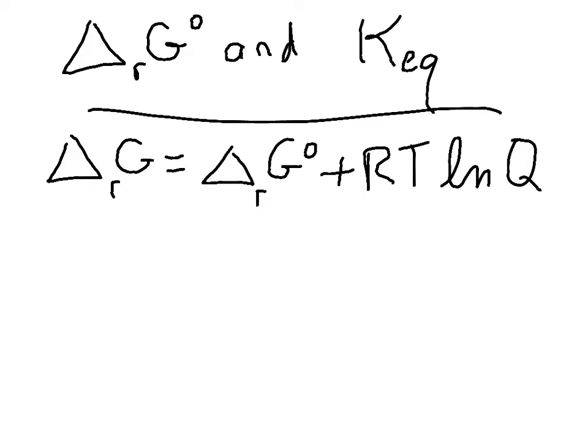If we imagine what this looks like at equilibrium - well, if we're at equilibrium, we can say a couple of things. First of all, the delta G is going to be zero, because the reaction doesn't have a tendency to go forward or backwards.